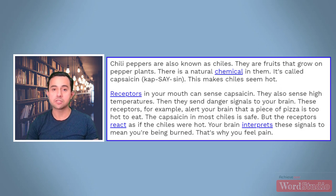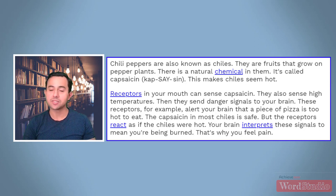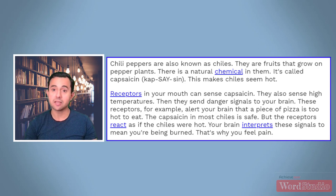Chili peppers are also known as chilies. They are fruits that grow on pepper plants. There is a natural chemical in them called capsaicin. This makes chili seem hot. Receptors in your mouth can sense capsaicin. They also sense high temperatures. Then they send danger signals to your brain. These receptors, for example, alert your brain that a piece of pizza is too hot to eat. The capsaicin in most chilies is safe, but the receptors react as if the chilies were hot. Your brain interprets these signals to mean you're being burnt. That's why you feel pain.